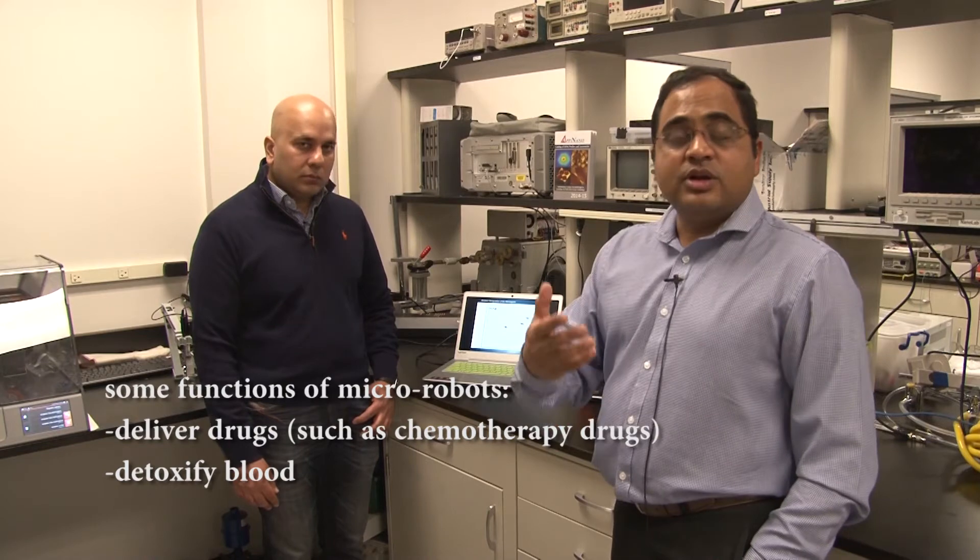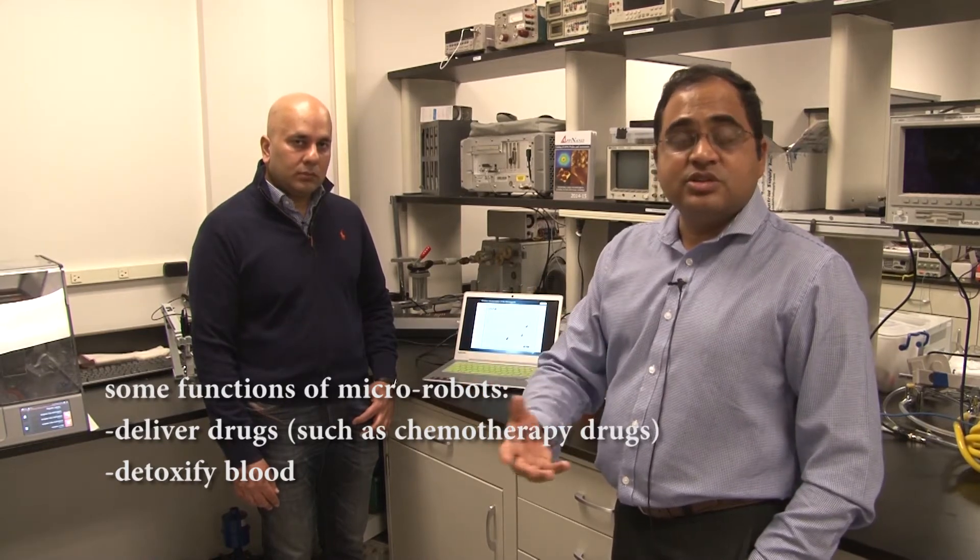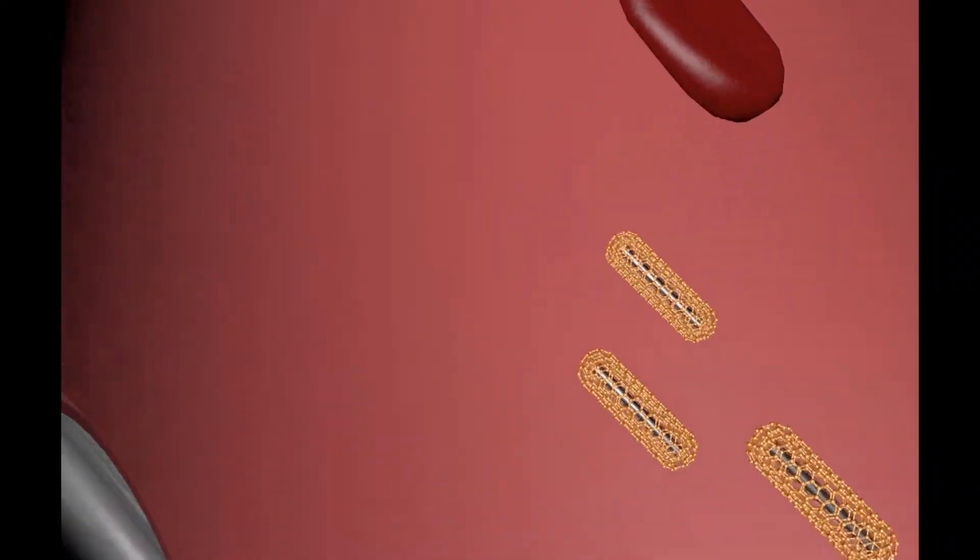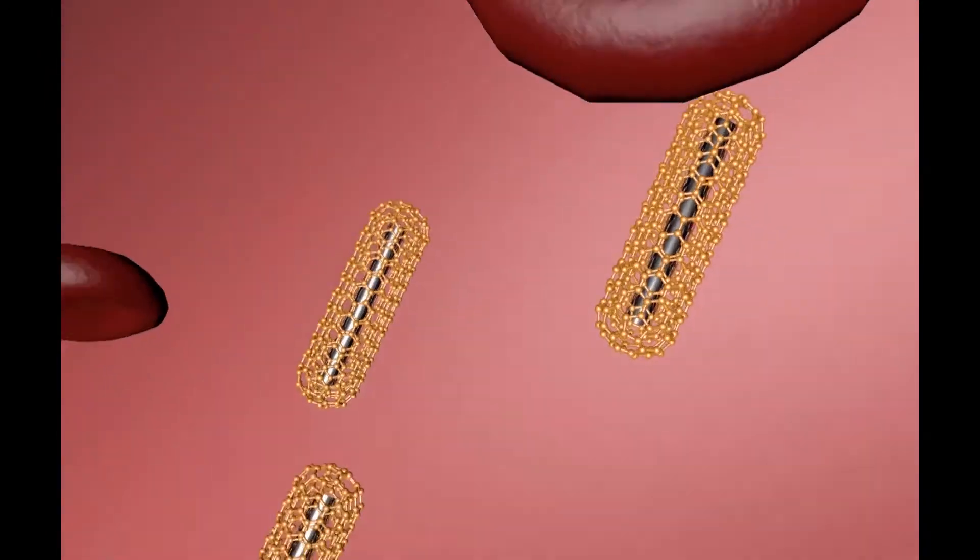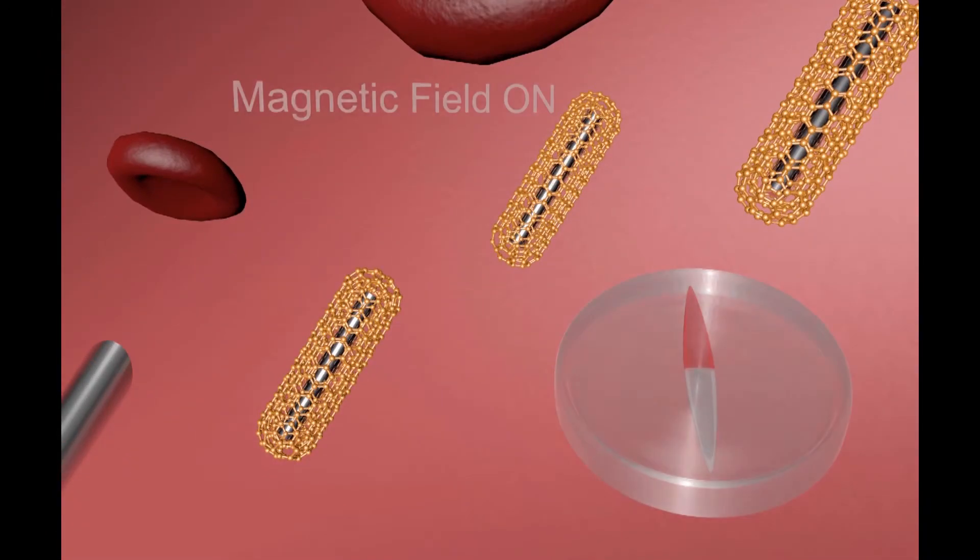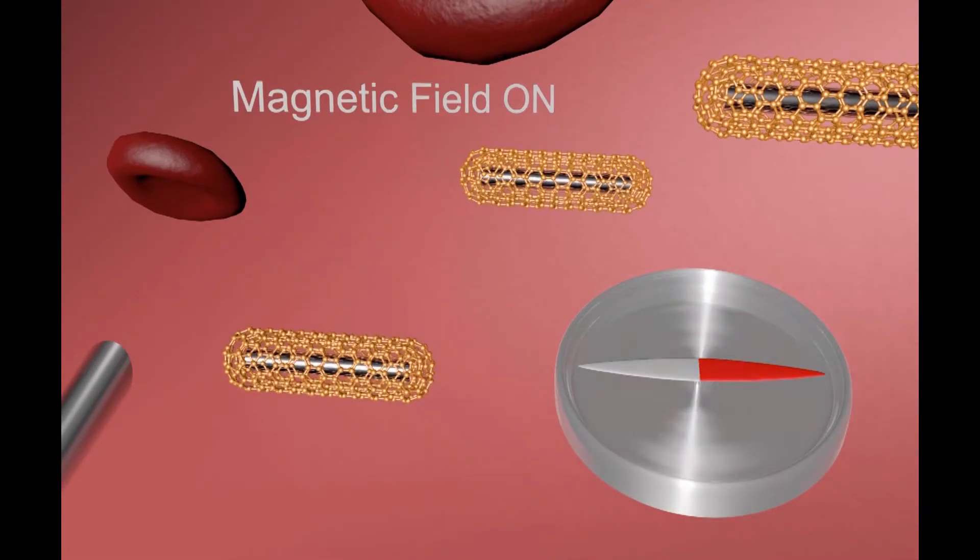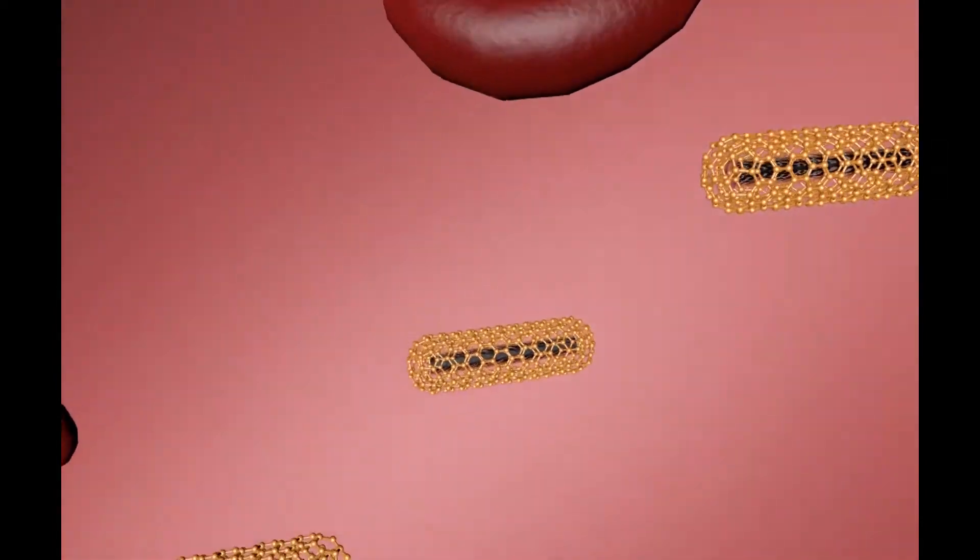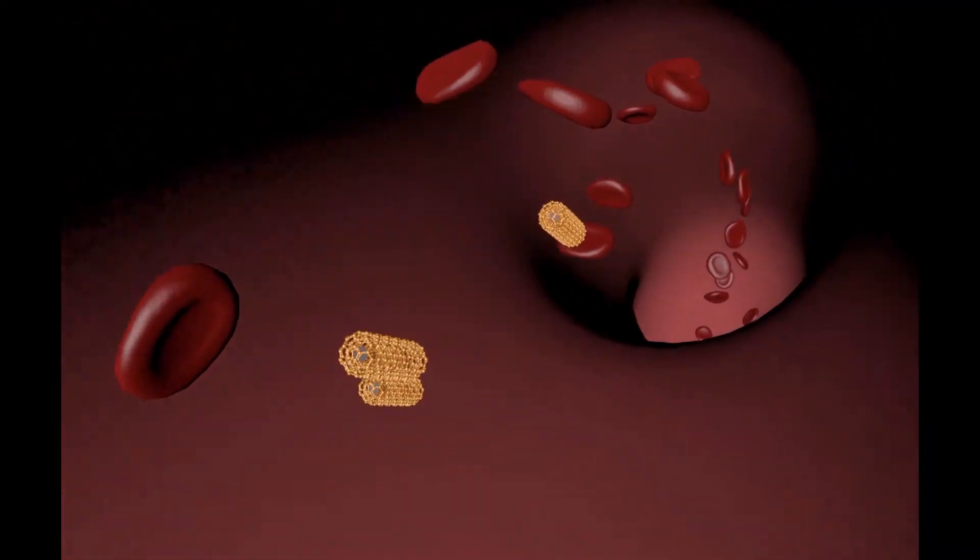You can also use these robots for applications such as detoxification. Let's say you have a toxin in your blood. They could actually be present in your blood as a way to trap all the toxins and detoxify your bloodstream. There are many possible applications for devices that can move and operate at such a small scale.